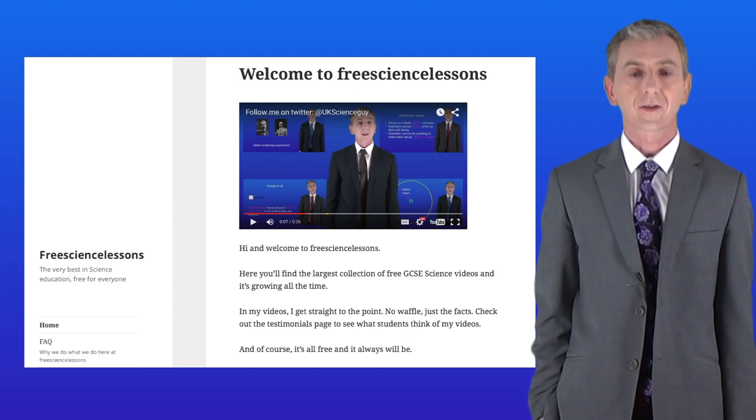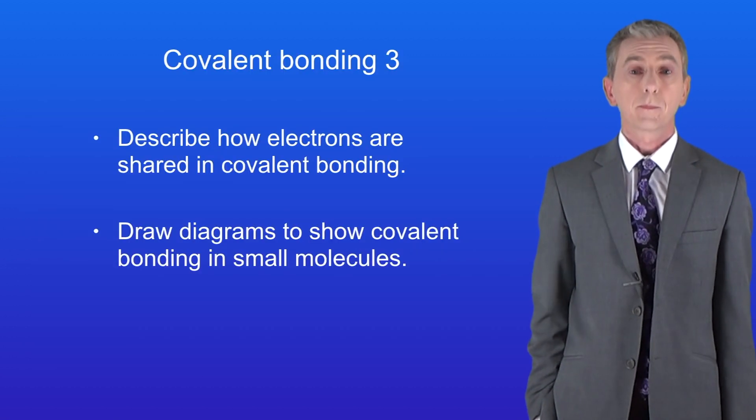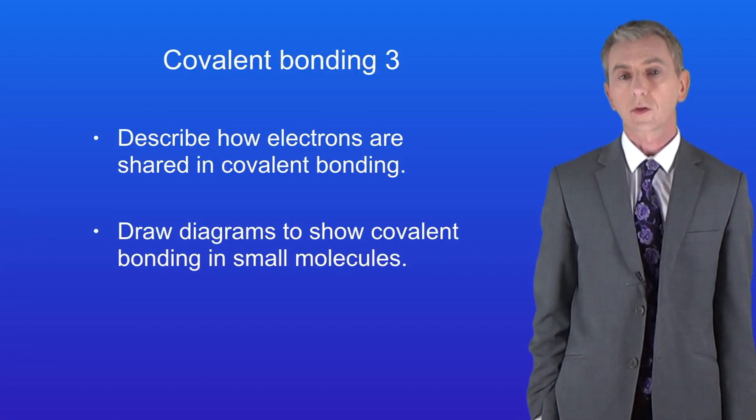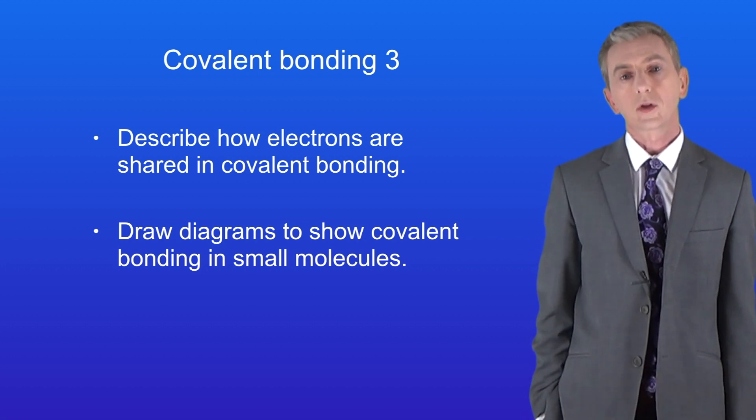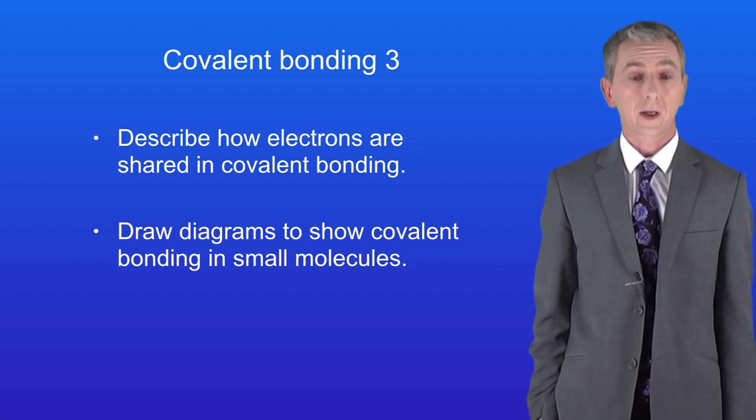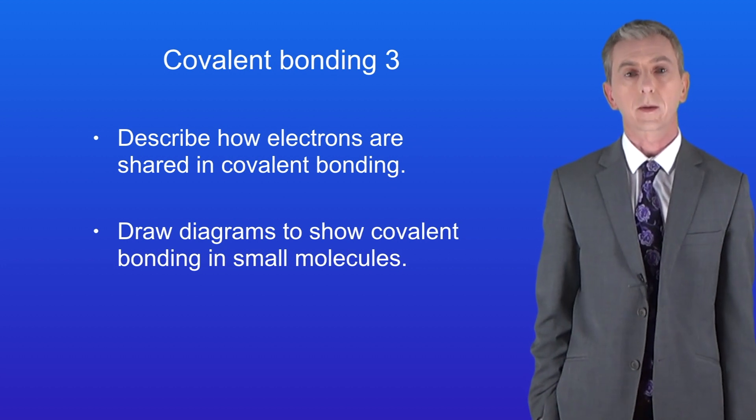Hi and welcome back to freesciencelessons.co.uk. By the end of this video you should be able to describe how electrons are shared in covalent bonding. You should then be able to draw dot and cross diagrams to show covalent bonding.